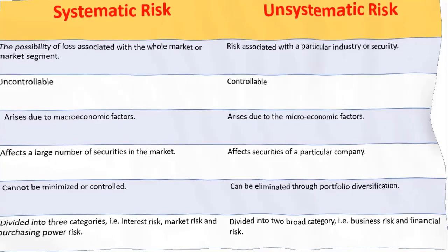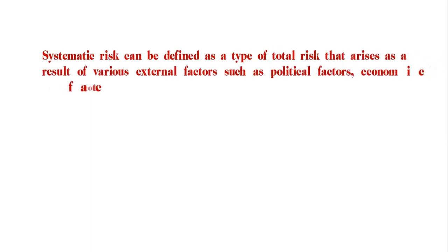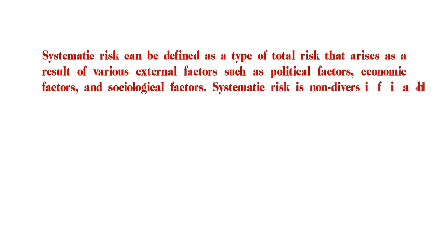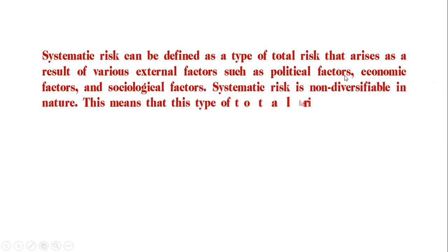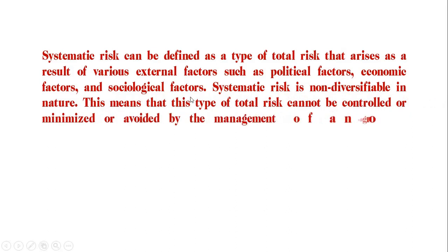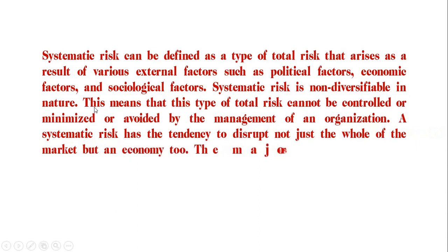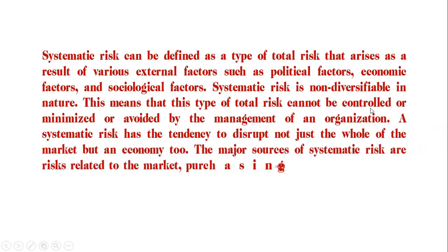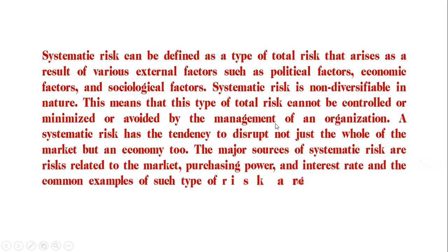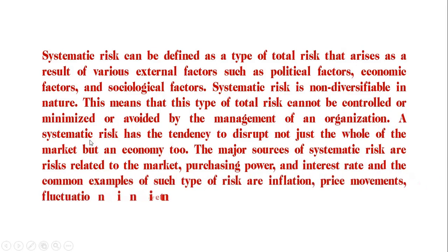From these key differences we can identify what is systematic risk and what is unsystematic risk. Systematic risk can be defined as a type of total risk that arises as a result of various external factors such as political factors, economic factors, and sociological factors. Systematic risk is non-diversifiable in nature, meaning it cannot be controlled, minimized, or avoided by the management of an organization. Systematic risk has the tendency to disrupt not just the whole market but an economy too.